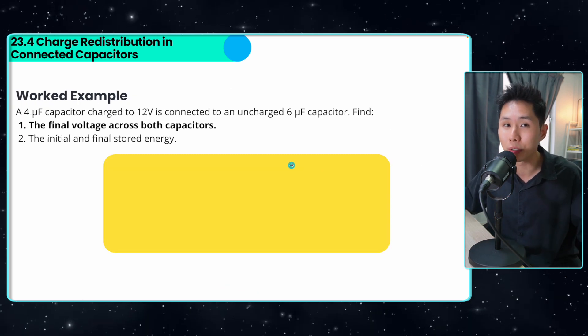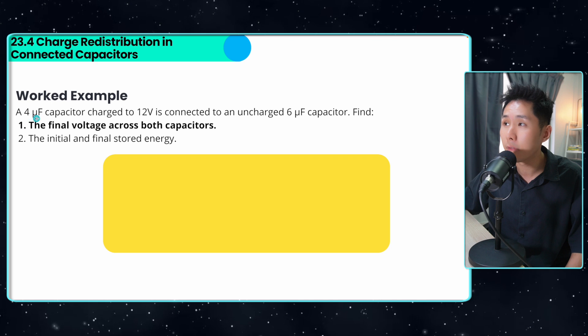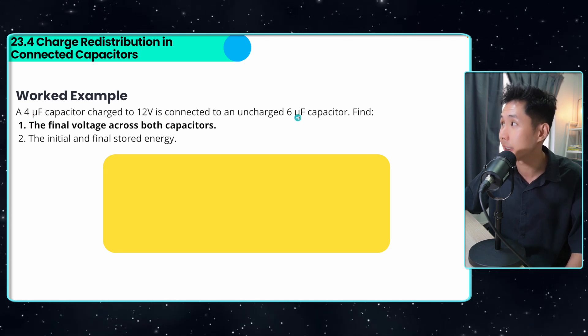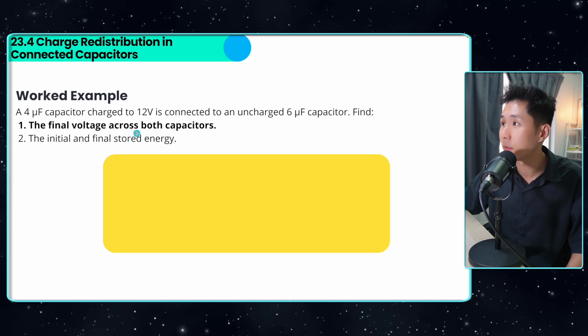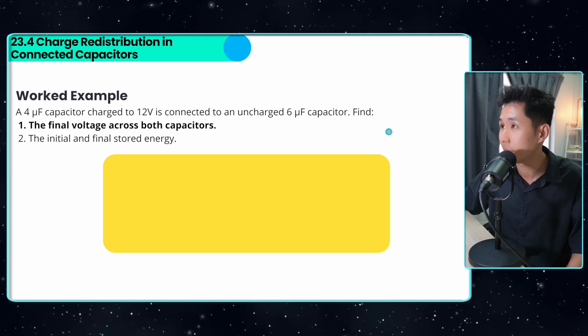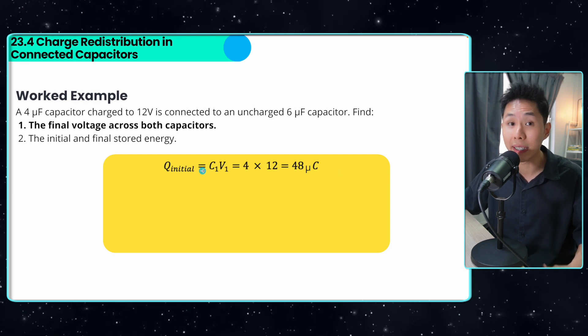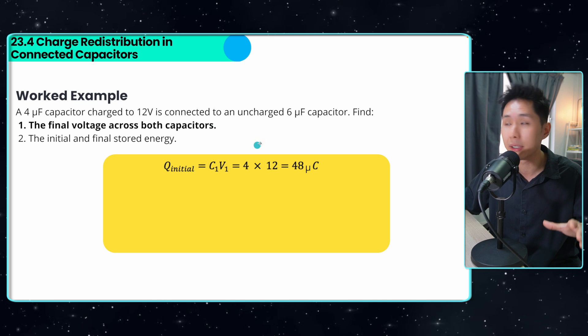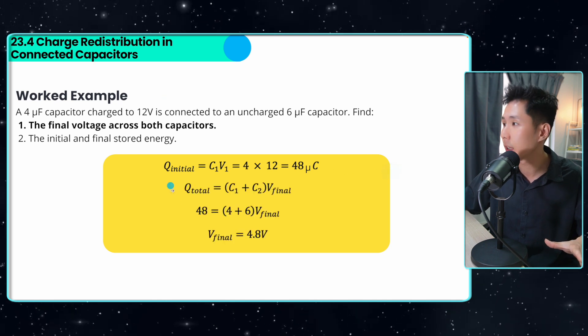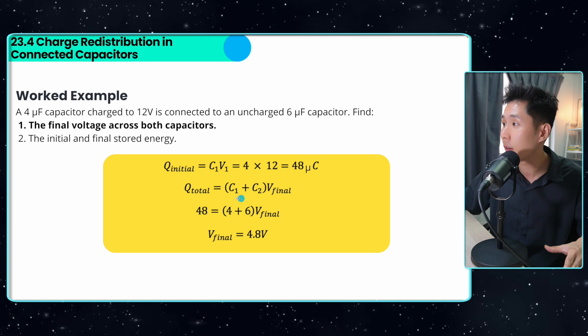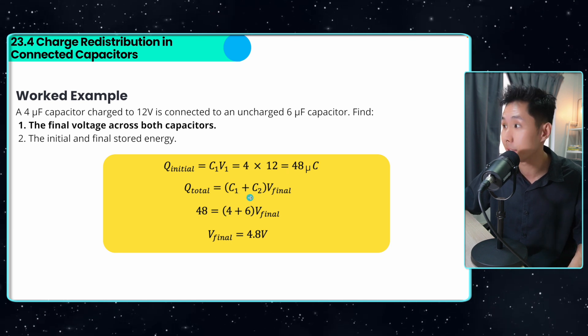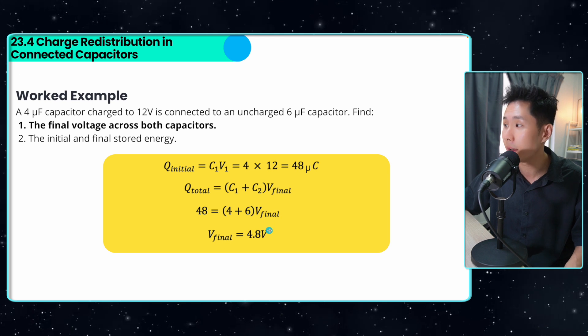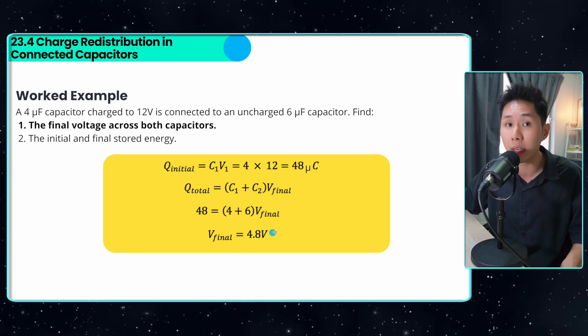Well, let's have some worked examples to solidify our concept. A four microfarad capacitor is connected to 12 volts to an uncharged six farad capacitor. Find the final voltage across both capacitors. First we figure out what's the initial charge stored by the capacitor. This charge will be conserved after the new capacitor has been added. So Q initial is equal to Q total. But now the only thing that changes is the capacitance value. So we just substitute the value inside. And we would have found out that the voltage has dropped to 4.8 volts.